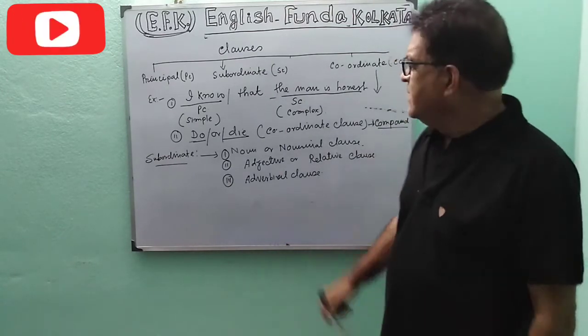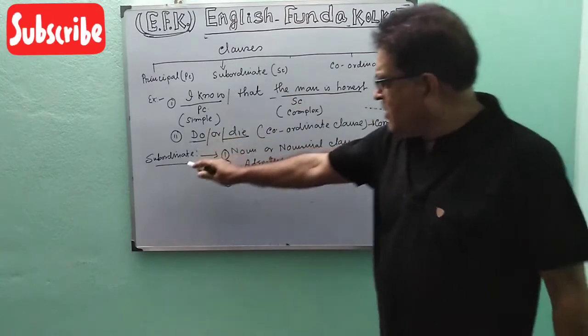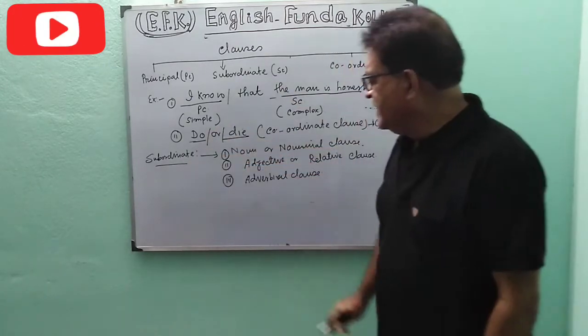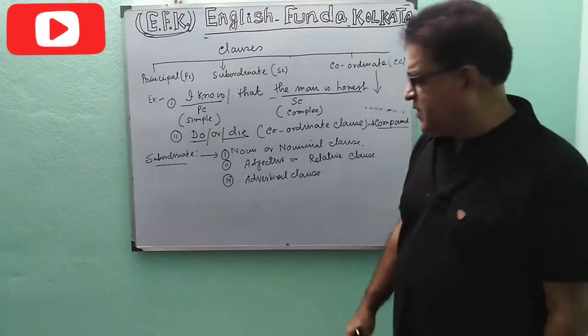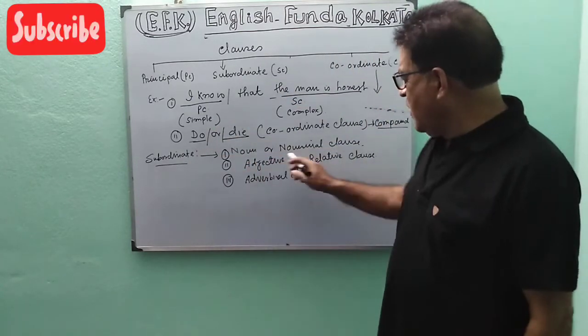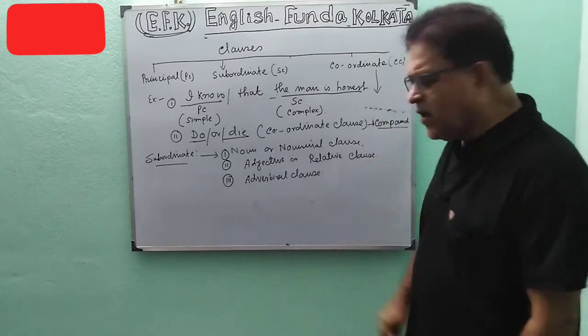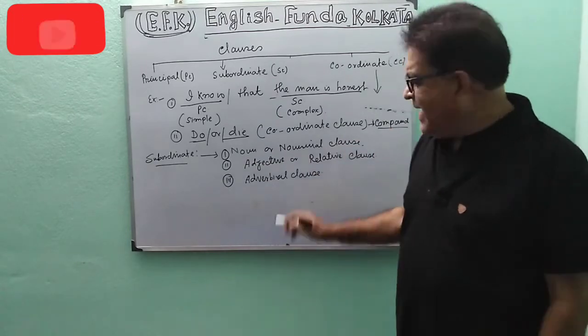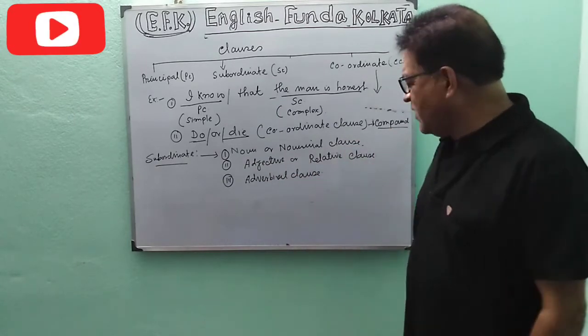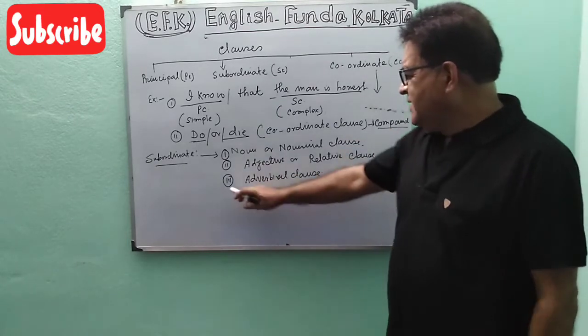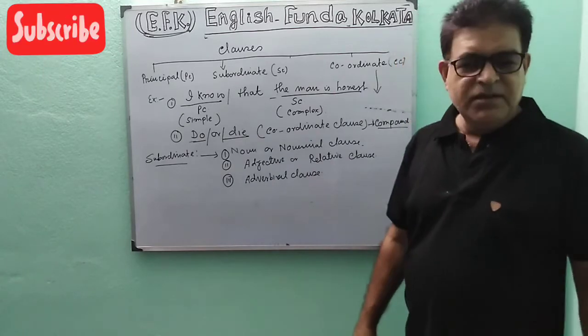Subordinate Clause is divided into three groups: Noun Clause or Nominal Clause, Adjective Clause or Relative Clause, and Adverbial Clause.